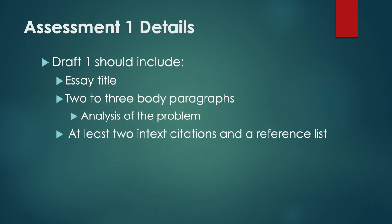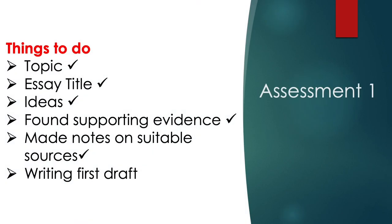Some further reminders about Assessment 1: Draft 1 should include a narrowed essay question, two to three body paragraphs analysing the problem, and you need at least two in-text citations and a reference list. I hope that you're making progress. You should have your topic and title, found ideas with supporting evidence, and made notes on suitable sources. Now you need to be writing your first draft so that you can submit before the deadline.